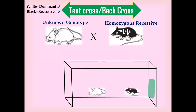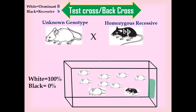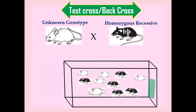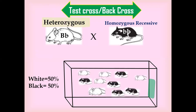We then wait for the F1 generation. If 100% of the F1 generation shows the dominant trait, it means the unknown genotype is homozygous dominant. Alternatively, if 50% are white and 50% are black in the F1 generation, that 50-50% phenotype result means the unknown variety is heterozygous, with a capital B and a lowercase b.